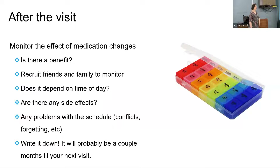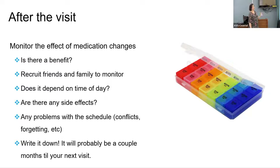Regarding protein and levodopa: it really depends on the specific patient. In the beginning of the disease, food doesn't really change medication effectiveness. But as the disease progresses, any small change in levodopa is going to affect how well the medication works. That's when we try to tell you to separate it from food — particularly protein-heavy meals, which will definitely cause that dose of levodopa to not work as well. Taking carbidopa-levodopa and waiting maybe half an hour before eating, especially protein-rich foods, is the recommendation.